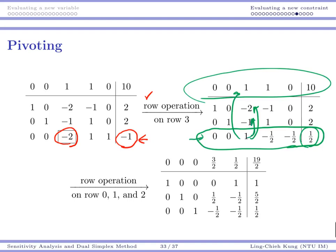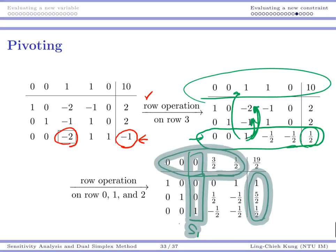We're going to add the last row to the second row and to the first row. Once we do all of this, this column for s3, or this column for s1, is going to be our basic column. And we can see that all these numbers are non-negative: all these numbers are non-negative, reduced costs are non-negative, right-hand sides are non-negative. This becomes our optimal solution.